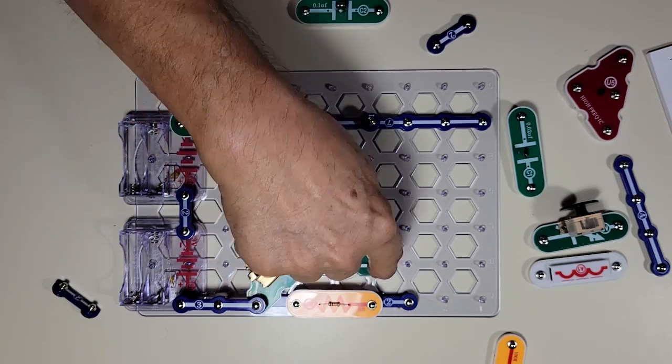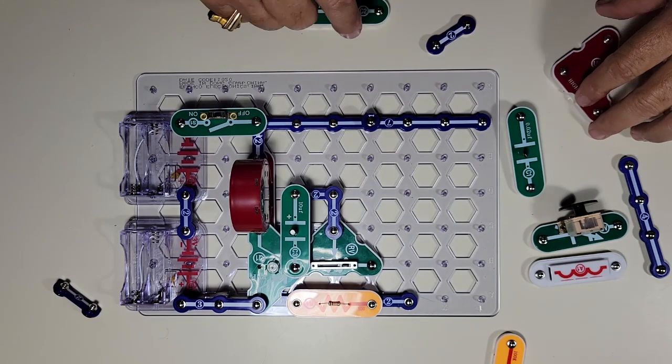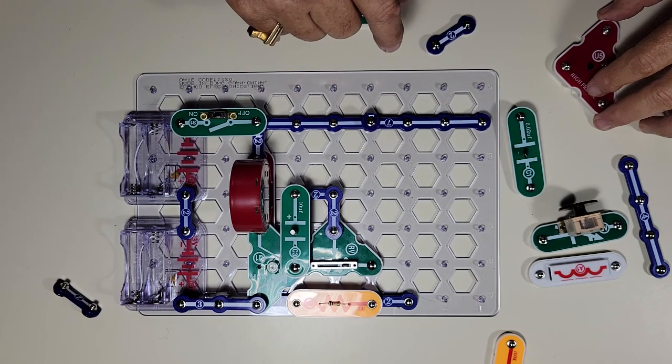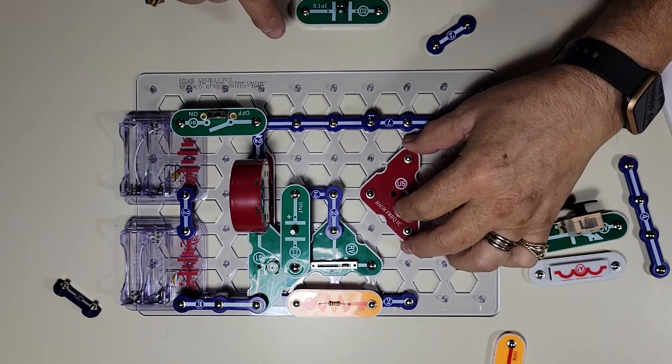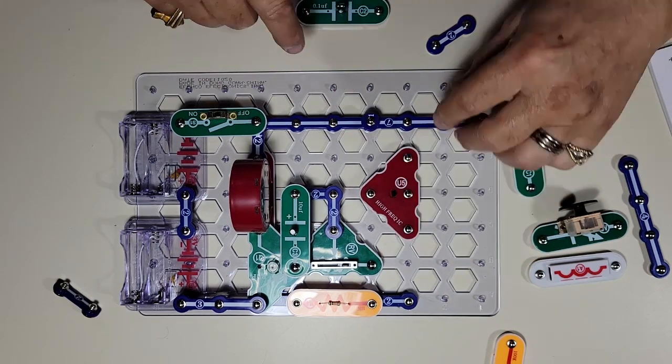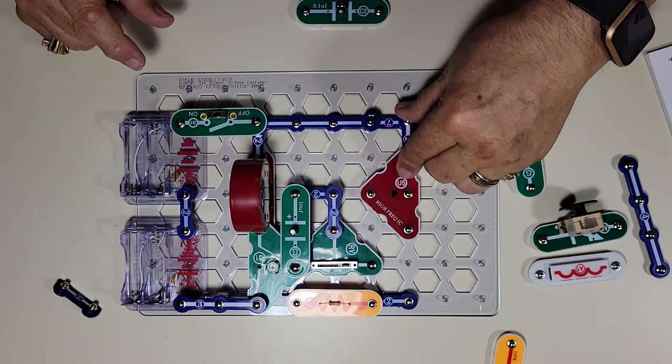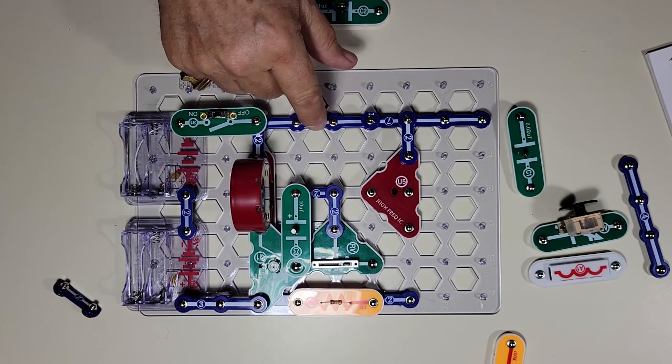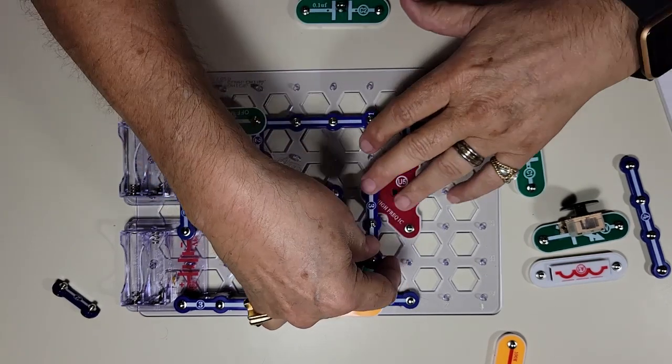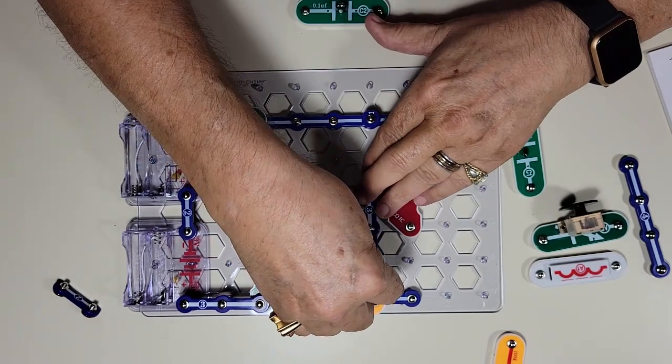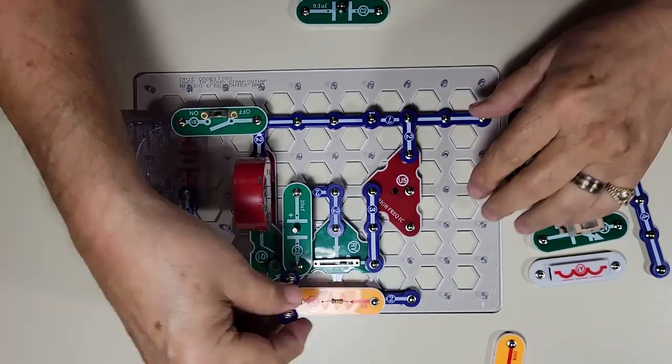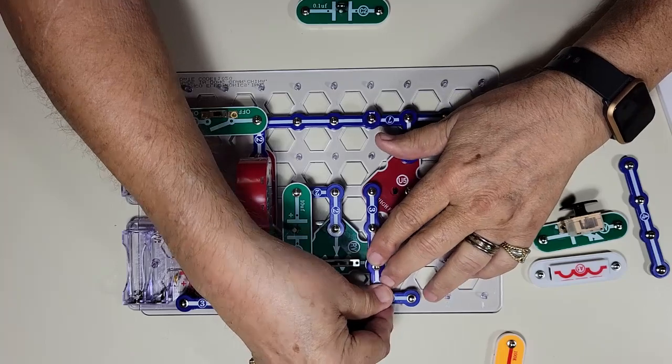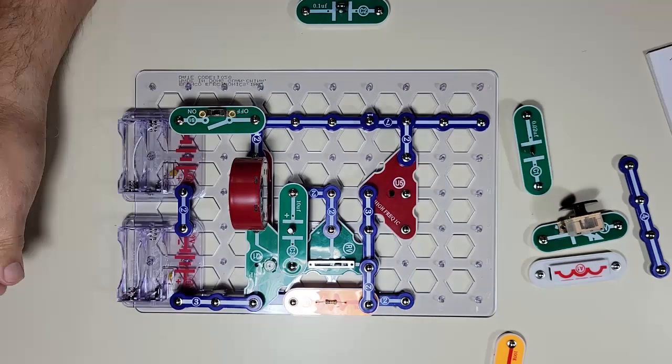We got... from here we got a two. We got our... U5 goes... U5 goes right here. With a two. Connecting it to that line. Okay. Now... we got a three. Right here. And a two. Right here. Connecting that circuit. Okay.